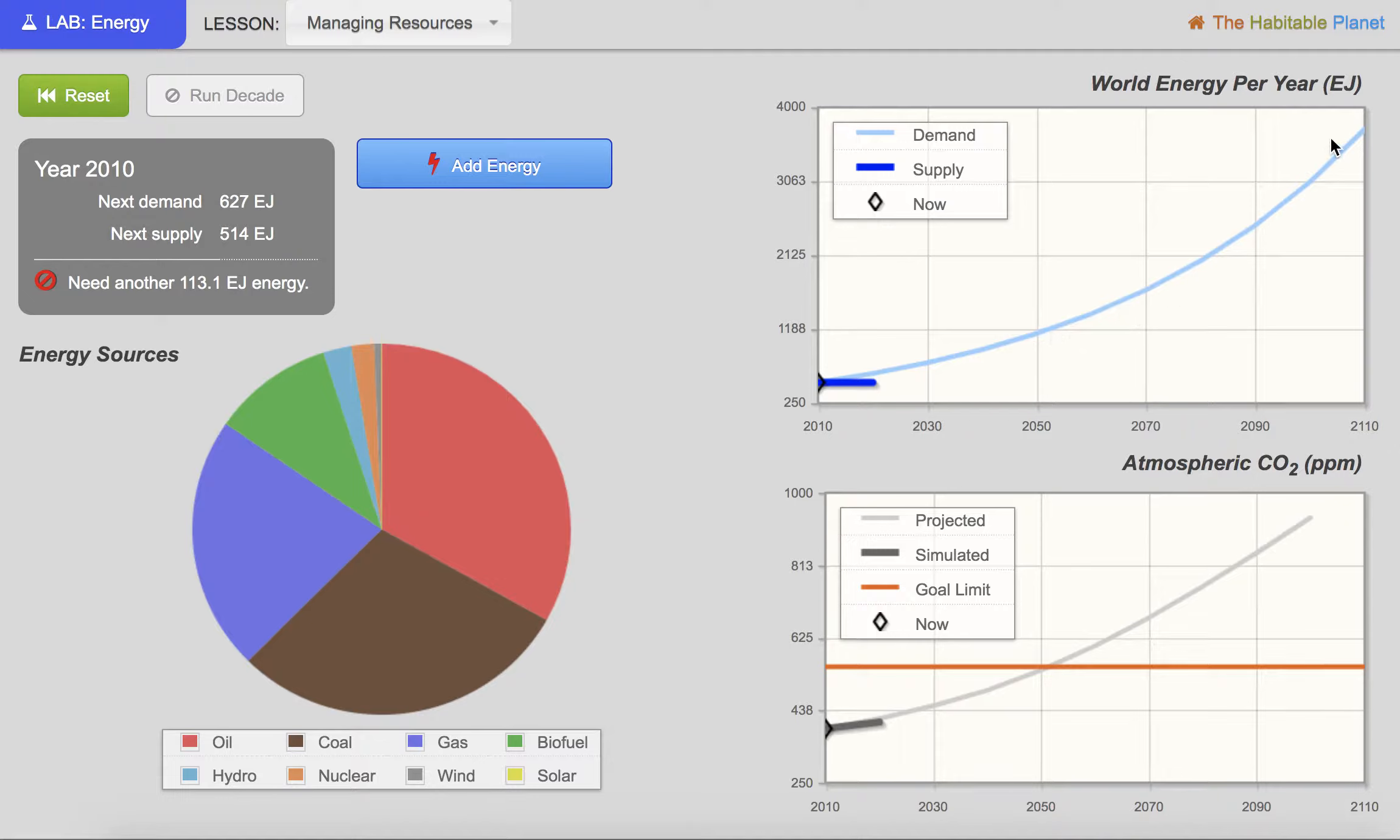So you're going to have to figure out how to meet that increasing need. At the same time, we need our atmospheric CO2 to stay below this orange line. So that's what you're looking for in this bottom graph.